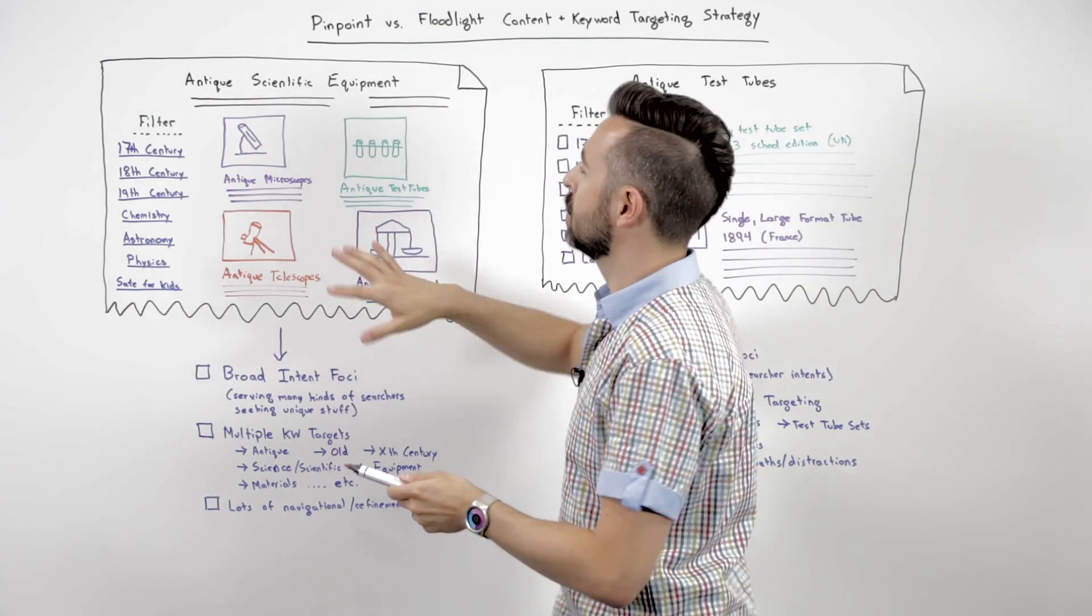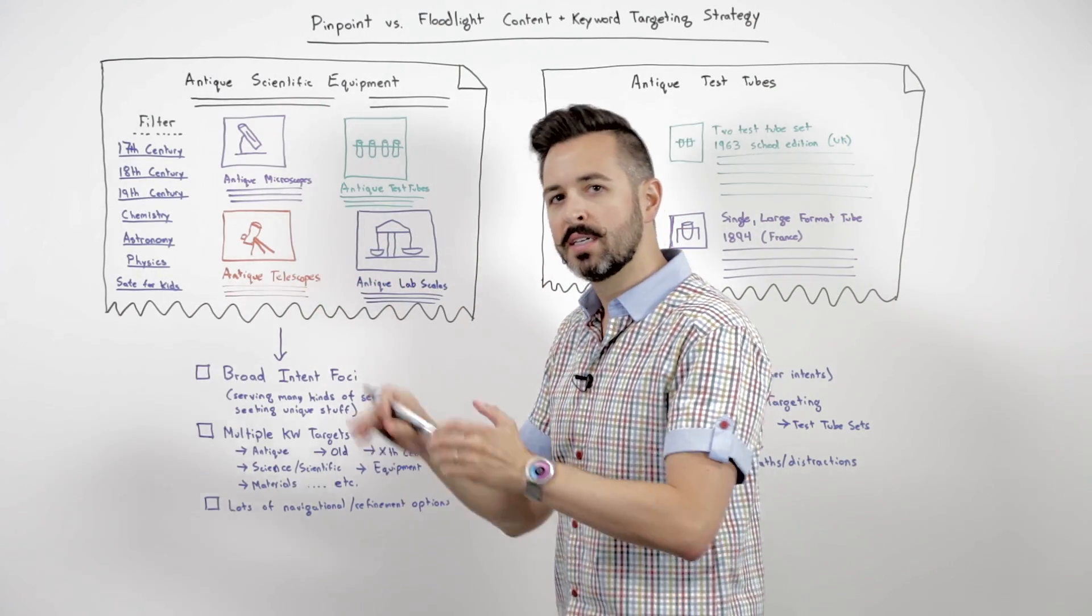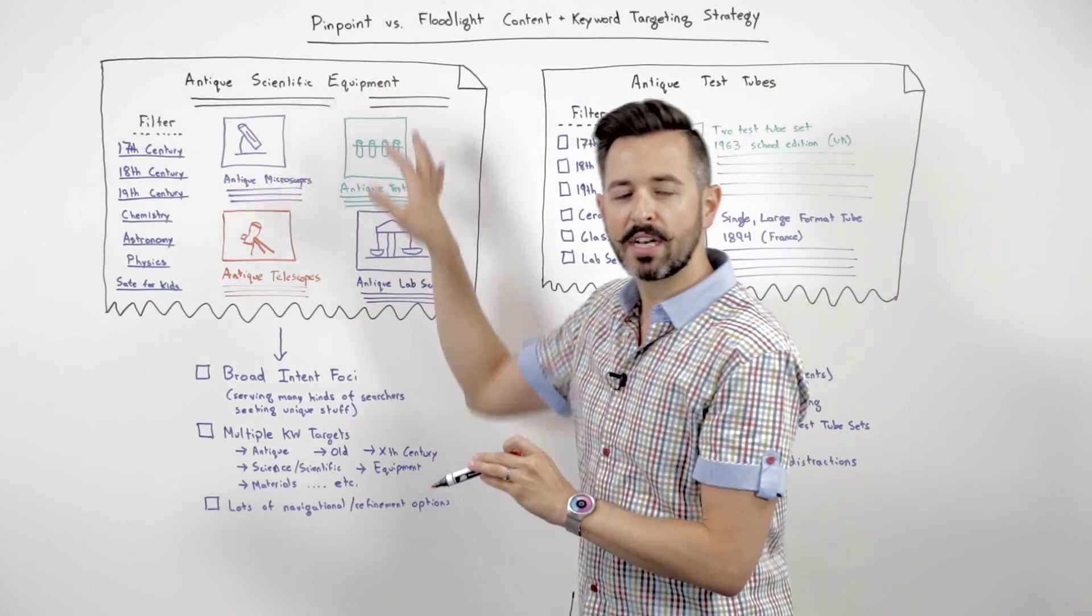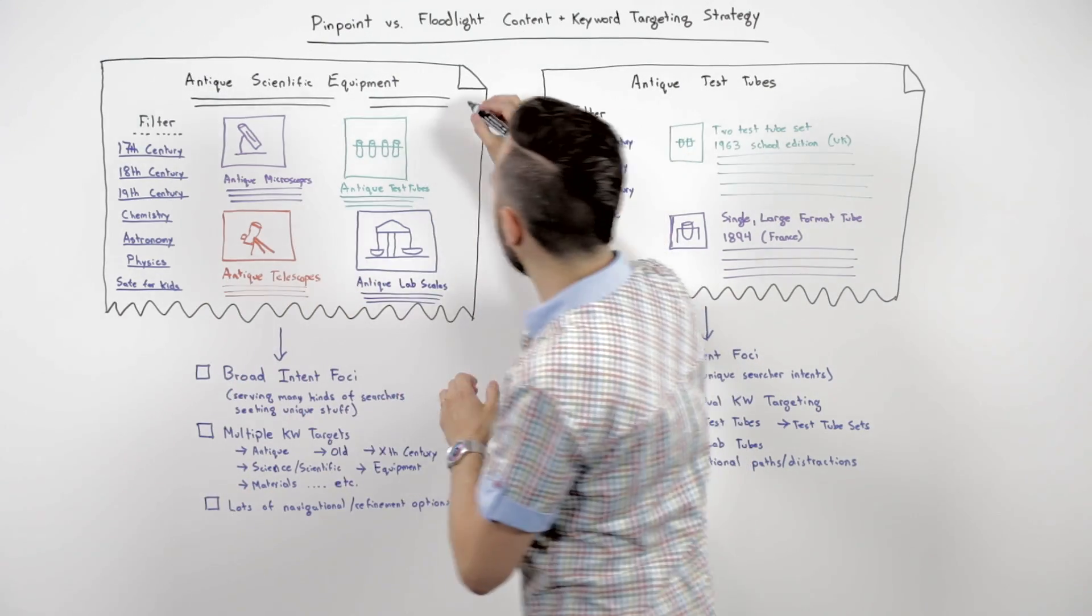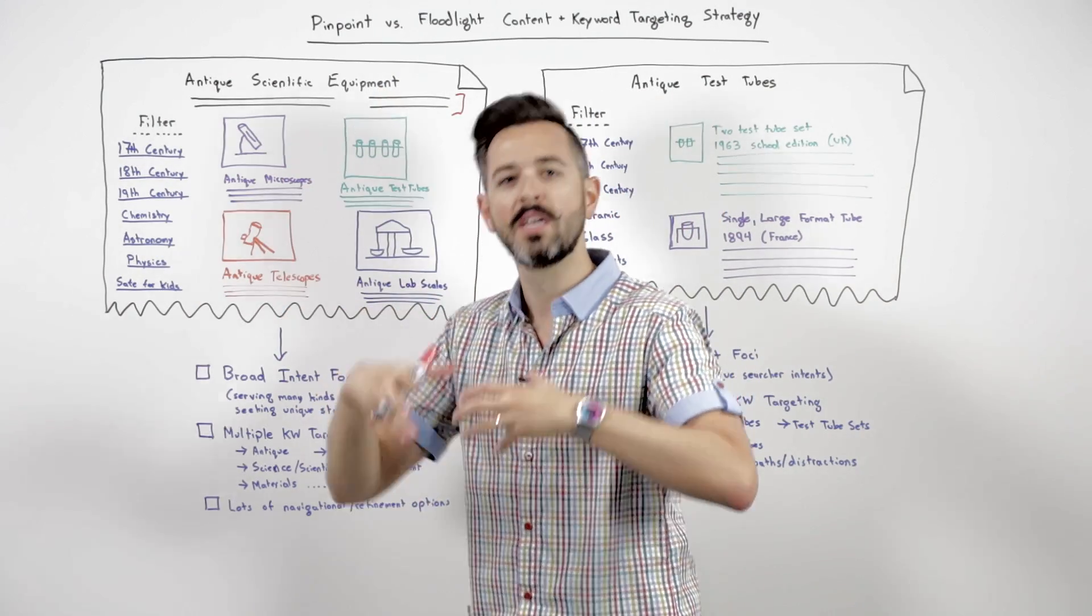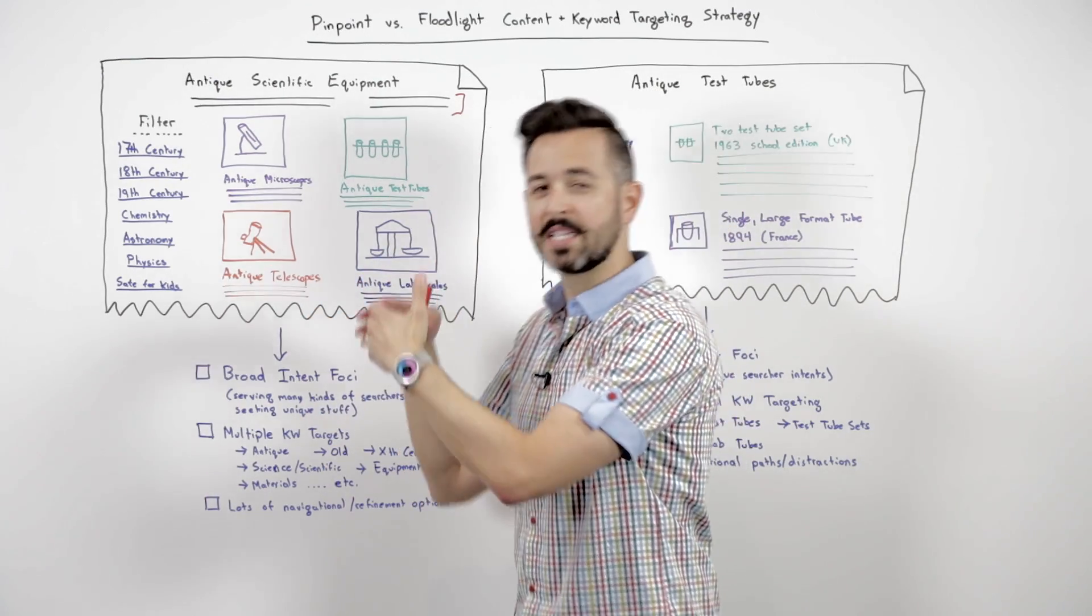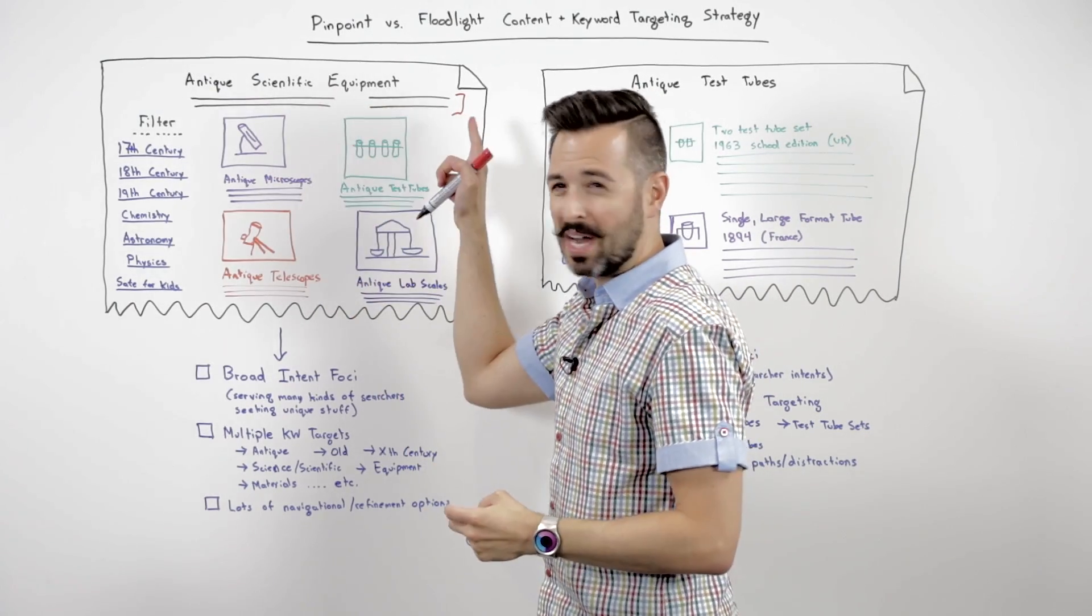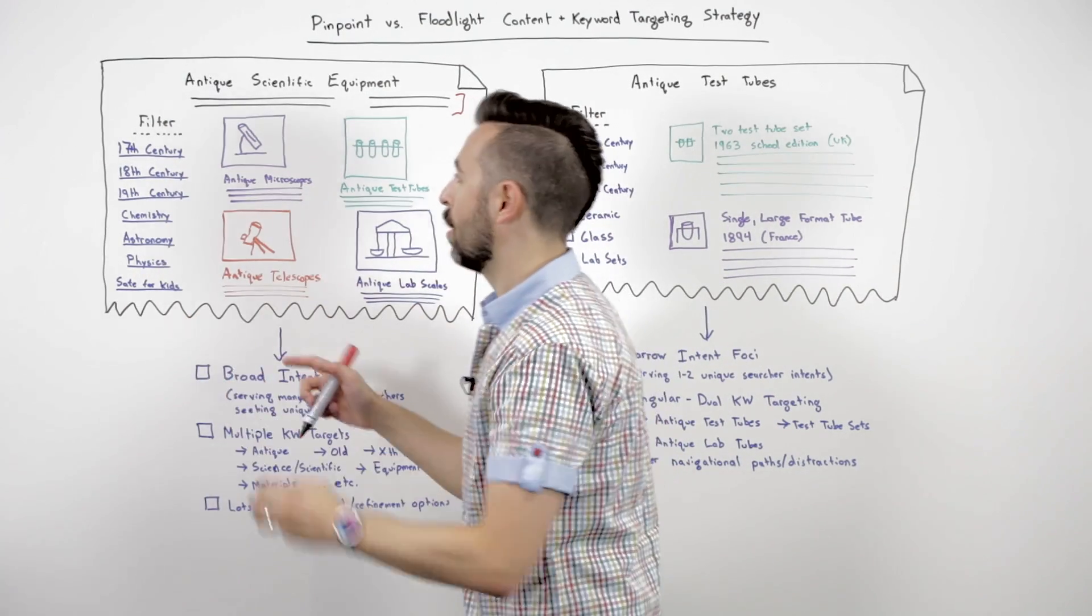So I've got two different types of pages here. One is my antique scientific equipment page. This is that floodlight shotgun approach. And what we're doing here is going to be very different from a pinpoint approach. It's looking at, you've landed on antique scientific equipment, now where do you want to go? What do you want to specifically explore? So we're going to have a little bit of content specifically about this topic. And how robust that is depends on the type of topic and the type of site you are. If this is an e-commerce site or a site that's showing information about various antiques, maybe we don't need very much content here.